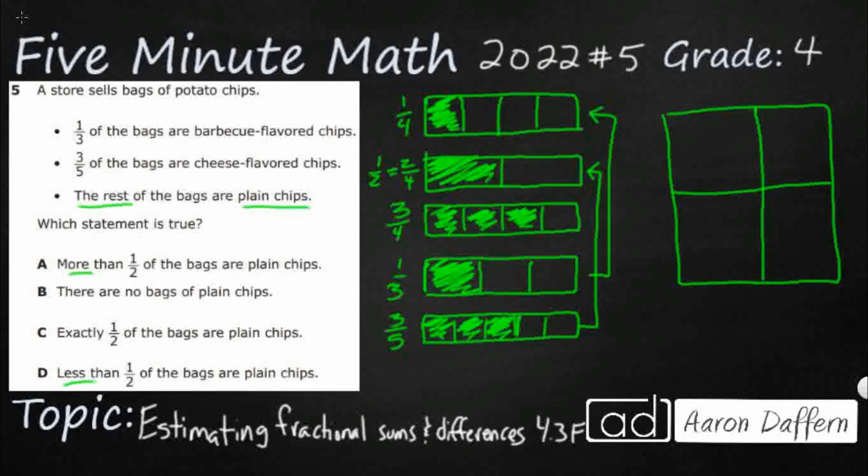And the one-third of the bags are barbecue, but that's kind of like one-fourth. It's close. So I'm going to label this barbecue, okay? And then it said three-fifths are cheese flavors. So this cheese flavor is kind of like one-half or two-fourths. So I'm just going to write ch, ch.